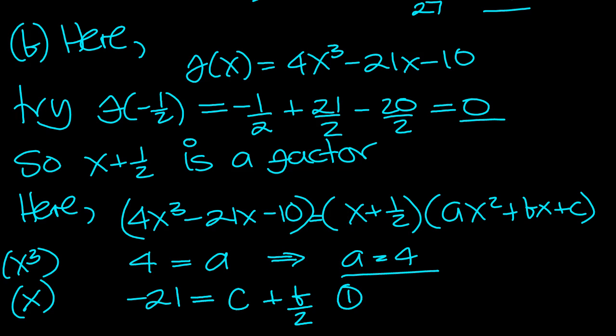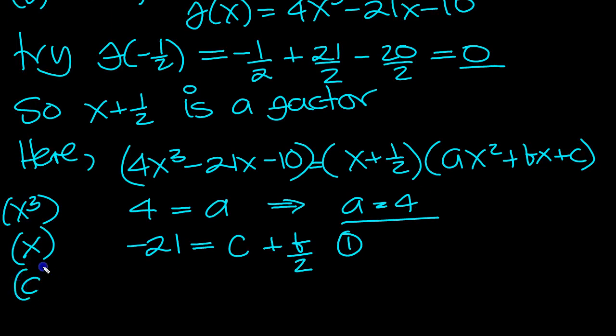But if we equate the constants now, that should be the thing we should have done before actually. Let's just equate the constants, minus 10 on this side. Now the constant on this side is, all that's going to come out is going to be the c over 2. So that tells us that c equals minus 20.